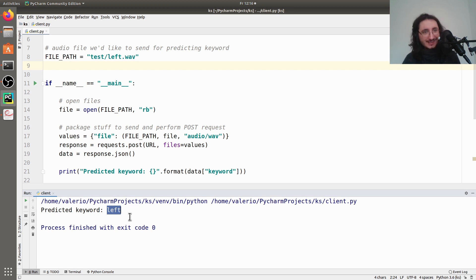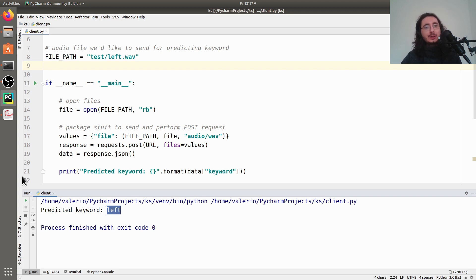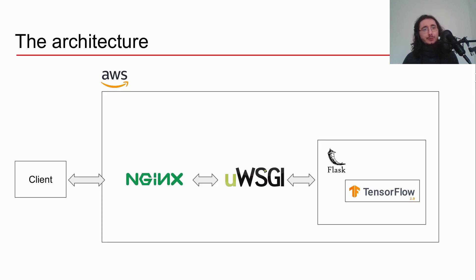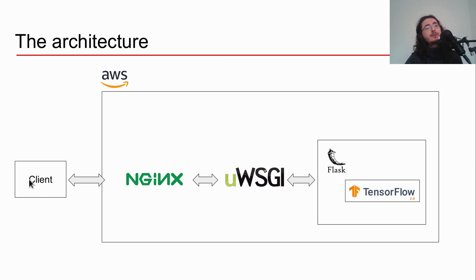I'm not going to get into the details of the code or the web server itself right now, because this is what we're going to build. What I want to do in this video is give you an overview of what you're going to learn and the type of architecture we'll need to put this keyword spotting system into production. Here's the whole architecture — I know it's a lot to take in, but it's extremely important you understand the big picture. What you just saw is the client, and with the client we send a POST request.